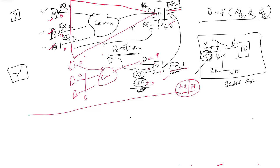For elements the tool cannot write boolean for — like flops, primary outputs, primary inputs, latches, and black boxes — it traces back to the nearest element with a known boolean boundary. For a black box, it writes the boolean starting from the input of the black box and traces back to the next flop output, latch output, or primary input. This is how the tool does this comparison.